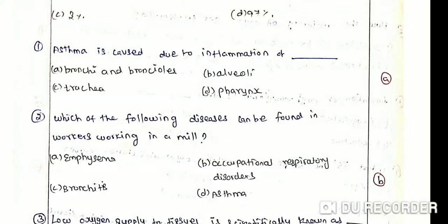Asthma is caused due to inflammation of dash. Option A: Bronchi and bronchioles. Option B: Alveoli. Option C: Trachea. Option D: Pharynx.